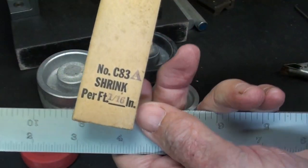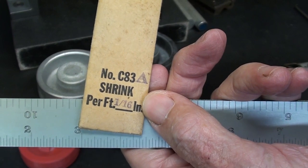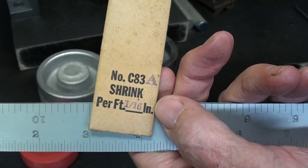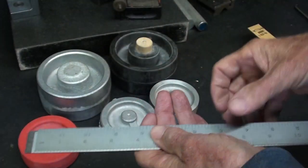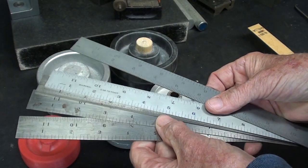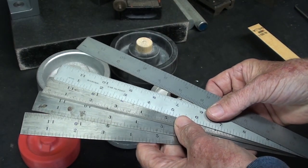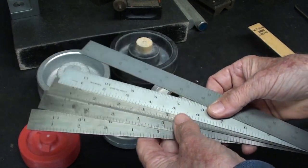This particular one was number C83A, and the shrink rate was 1/16th of an inch per foot. Now in my hand here, I have five rules, not rulers. Boy, somebody got so mad when I call these rulers. They want to argue semantics.